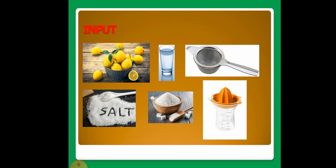To make nimbu paani, to make lemon juice, what are the things we need? We need lemon, water, filter, salt, sugar and lemon juicer. We squeeze out the juice, which extracts the juice from the lemon. So these are the things we need to take to prepare lemon juice. These things are called as input. The things which are required to make lemon juice are input.